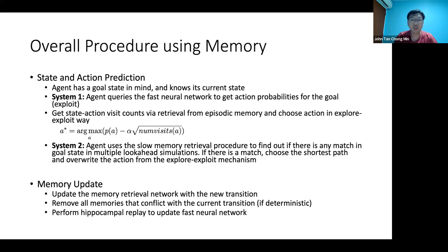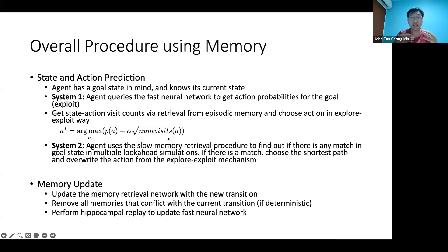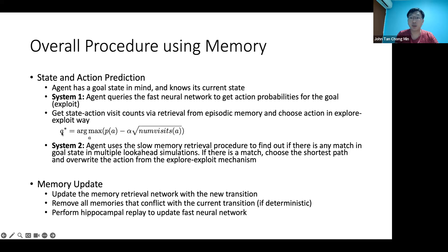How do we use this whole procedure? Given the start state and the end state, I first use the fast neural network to give action probabilities for various actions. I do an explore-exploit step — a variant of the UCT algorithm — because sometimes the neural network may not be right, and if you've visited a state before you may want to try something new. After that, we use the slow memory retrieval to see if we can get a trajectory. If so, we override the action from the fast system. If no trajectory is found, we just go with the fast system.